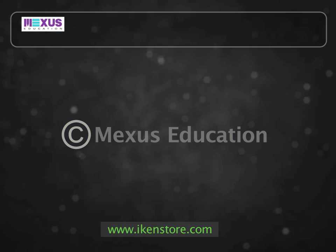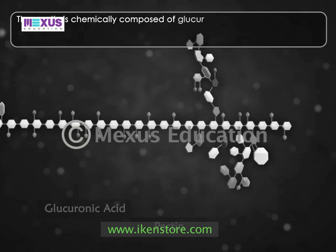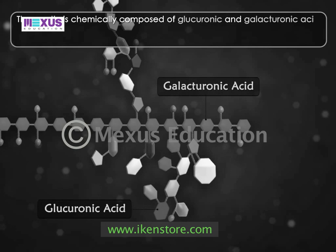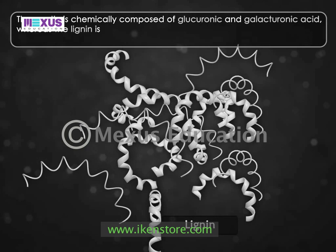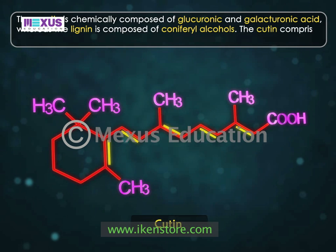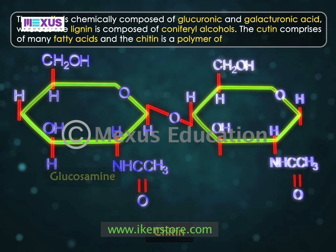The pectin is chemically composed of glucuronic and galacturonic acid, whereas the lignin is composed of coniferyl alcohols. The cutin comprises many fatty acids, and the chitin is the polymer of glucosamine.